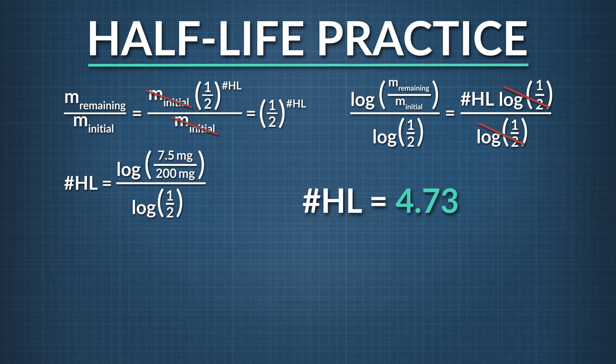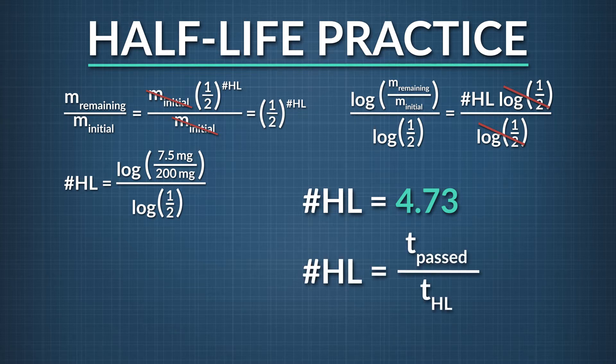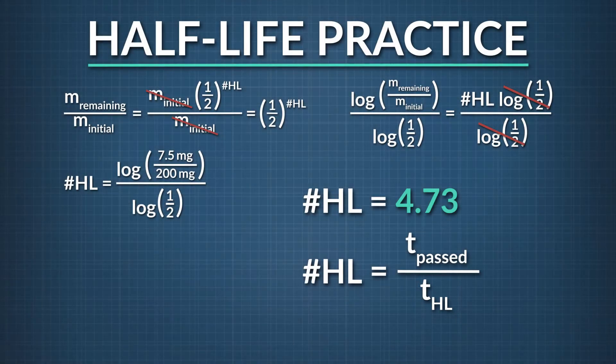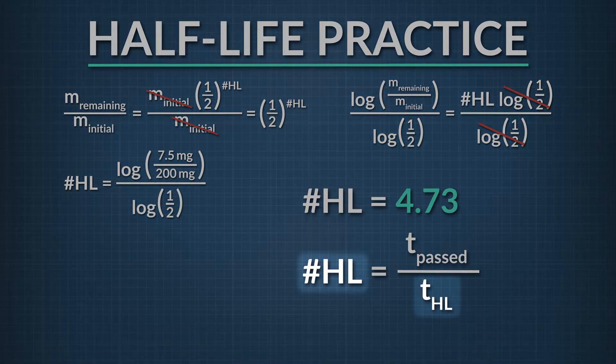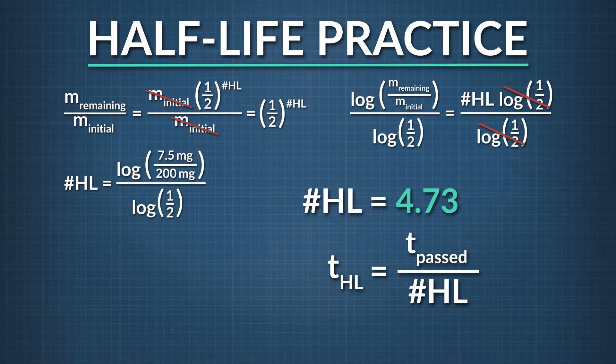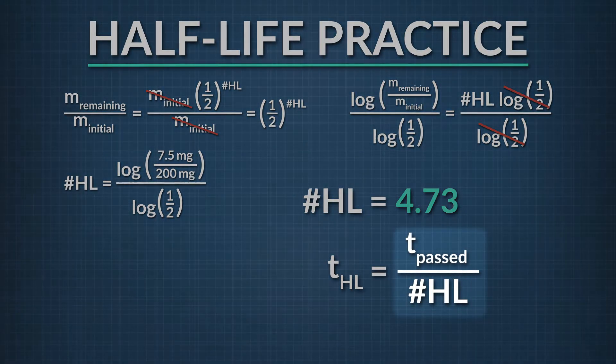The next thing we want to know is how long each one of these 4.73 half-lives is. To figure that out, we can use our equation relating time and half-lives passed. The number of half-lives equals the time passed divided by the time for each half-life. We multiply both sides of the equation by the time of each half-life, t sub HL, and divide both sides by the number of half-lives passed. We find that each half-life is equal to the time passed divided by the number of half-lives.